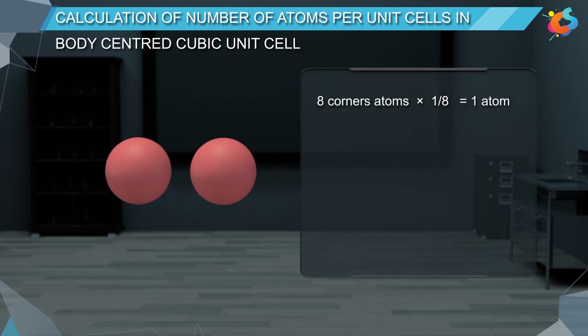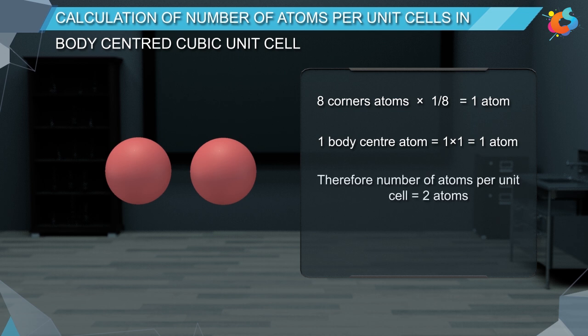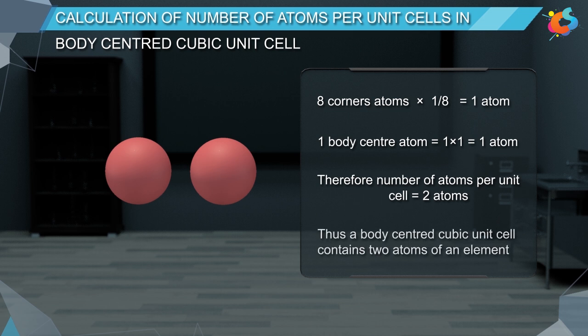Eight corner atoms × 1/8 = 1 atom. One body-centred atom = 1 × 1 = 1 atom. Therefore, the number of atoms per unit cell is equal to 2 atoms. Thus, a body-centred cubic unit cell contains 2 atoms of an element.